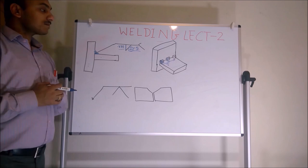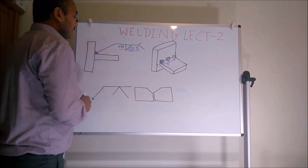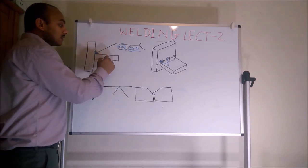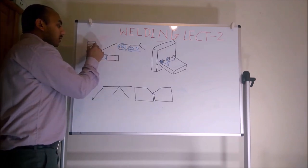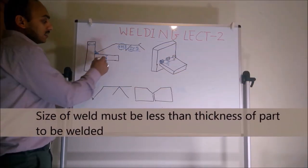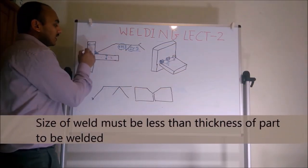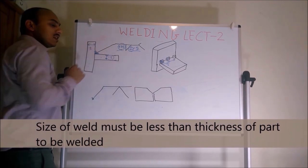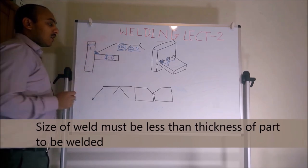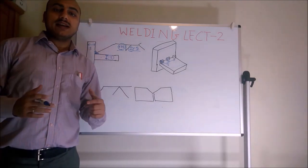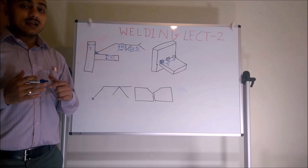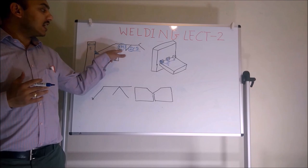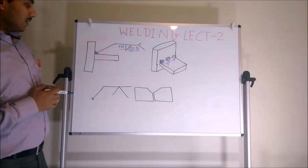In case of fillet weld, remember that the size of the weld cannot exceed the thickness of the plates. For example, if one plate is 0.2 inches thick and another is 0.3 inches thick, the weld size should not exceed those thicknesses, otherwise there will be no proper penetration. This must be kept in mind when giving the dimension or size of weld.